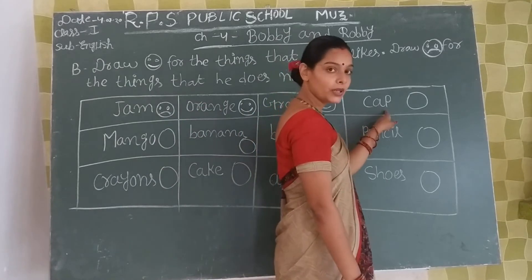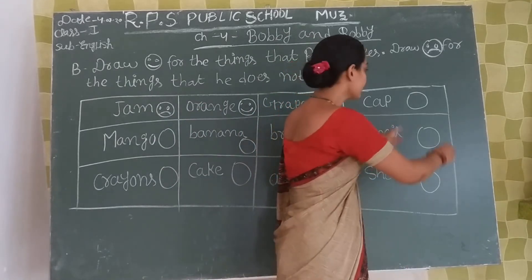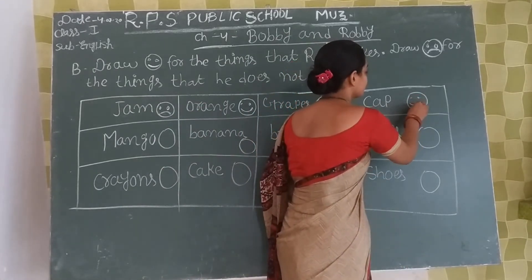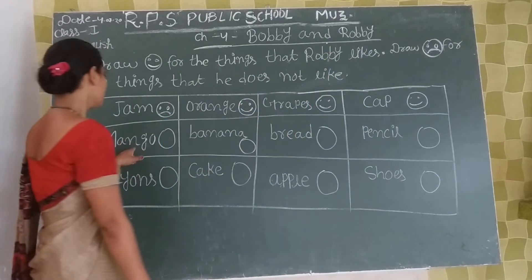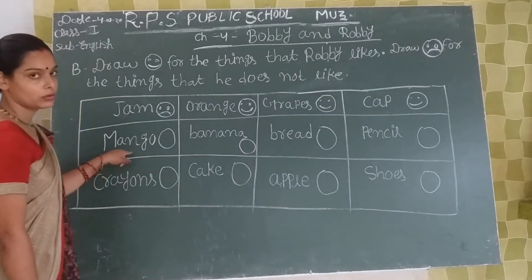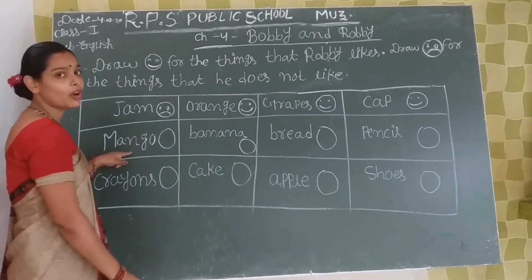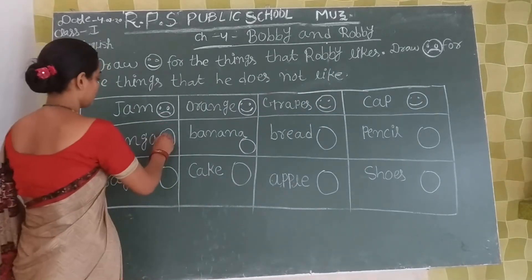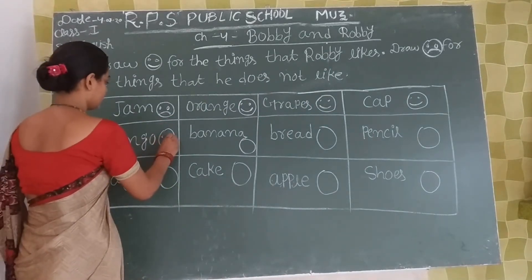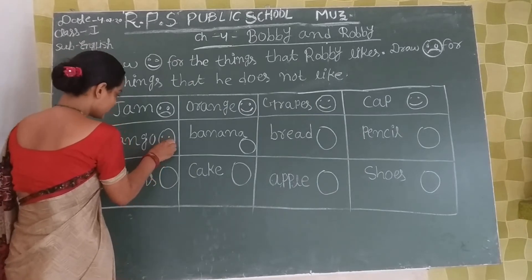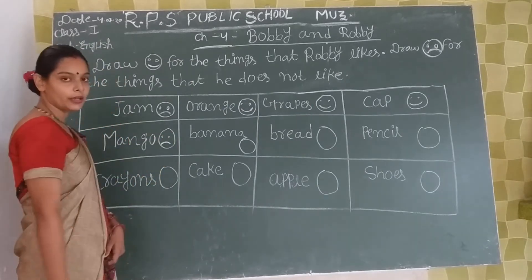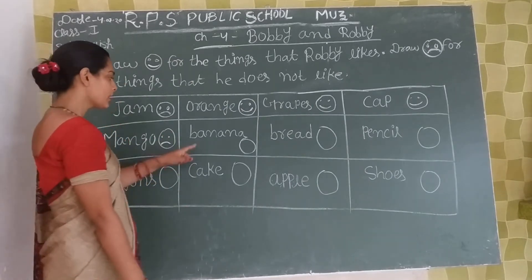Robbie likes cat. Okay, mango — Robbie doesn't like mango.